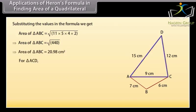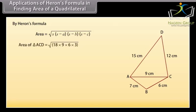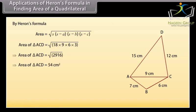For triangle ACD, S = (9 + 12 + 15) / 2 = 18 cm. By Heron's formula, area = √(S × (S−A) × (S−B) × (S−C)) = √(18 × 9 × 6 × 3). By solving it we get the area of triangle ACD = 54 cm².